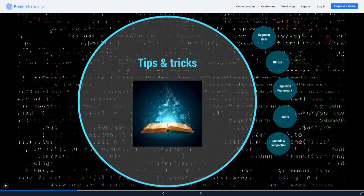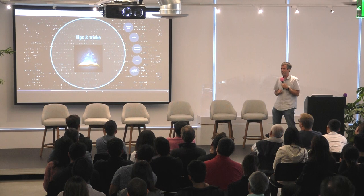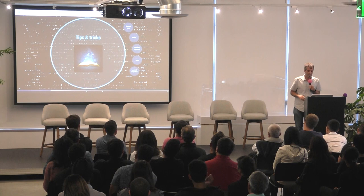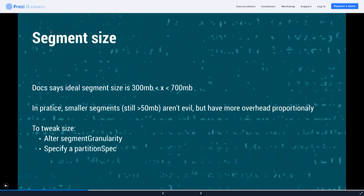Now I'm getting into a section about tips and tricks — things you need to know if you're going to load data in Druid, including how to mitigate space usage and summarize your data as you bring it in. The first thing is segment sizes. The documentation on the Druid website says a segment size should ideally be somewhere between 300 and 700 megabytes.